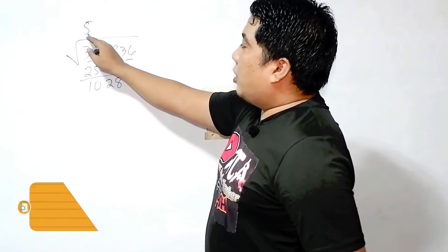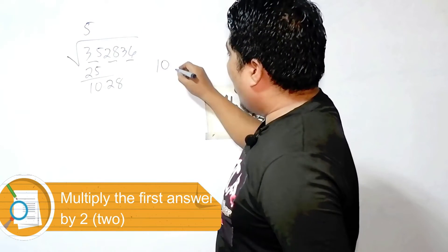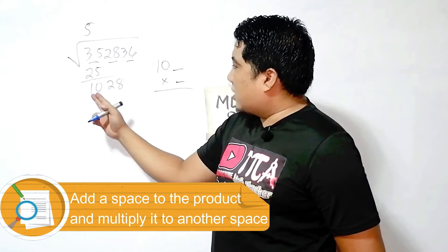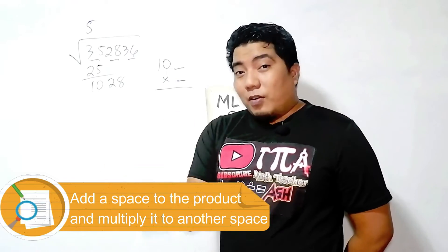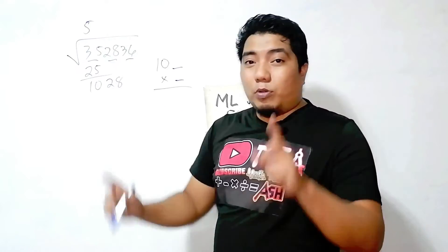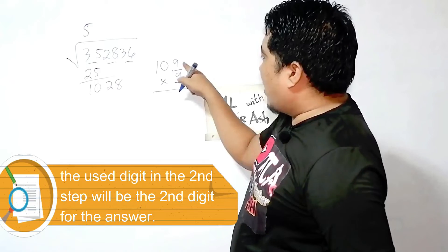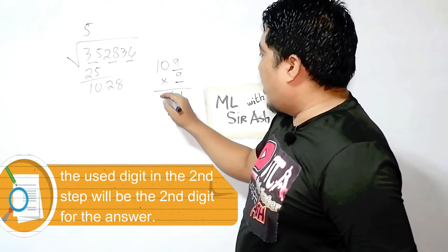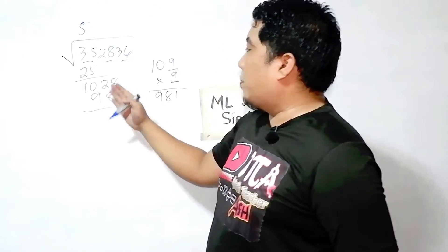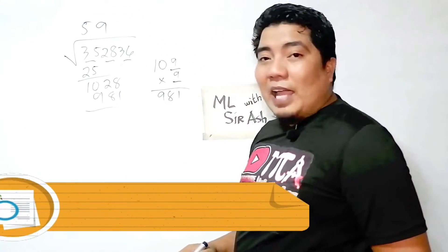Next, multiply your first digit by 2: 5 times 2 is 10. You add one digit and multiply it by that digit. Since we have 10, and if we divide 1,028 by 10 the answer would be about 10 — but since we put only one digit, let's start with 9. So 9 times 9 is 81, and 9 times 1 is 9, giving us 981 — actually, we have here 109 times 9 equals 981. This is applicable to our 1,028, so our second digit is 9.